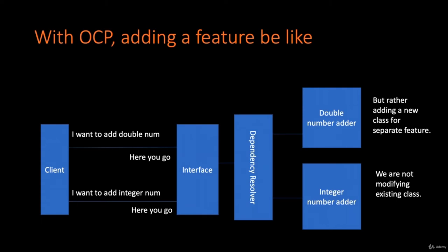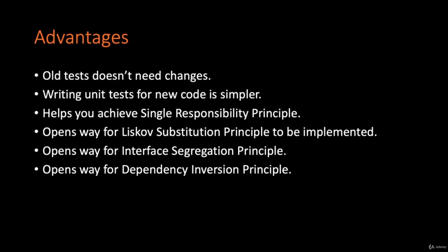You don't have to modify your old unit tests since your old code didn't change at all. You're free to add any new feature just by adding a separate class. We are not modifying, editing, or deleting an existing class to achieve something new — we're just adding. Advantages of OCP: old unit test cases don't need changes, writing unit tests for new code is simple, it helps achieve Single Responsibility Principle, and it opens the way for Liskov Substitution, Interface Segregation, and Dependency Inversion Principles.